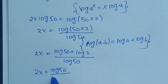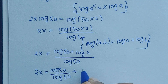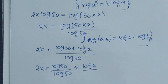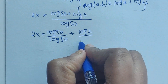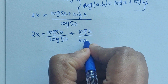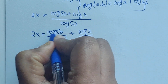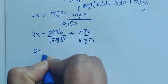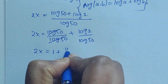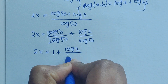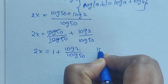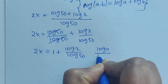So we get 2x equals log 50 plus log 2, all divided by log 50. This gives us log 50 divided by log 50 plus log 2 divided by log 50. The log 50 over log 50 cancels, so 2x equals 1 plus log 2 divided by log 50.